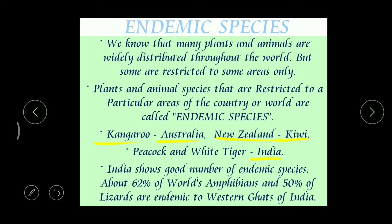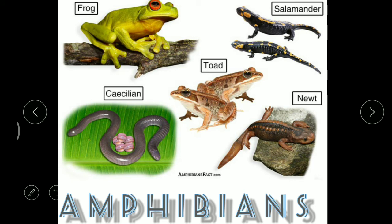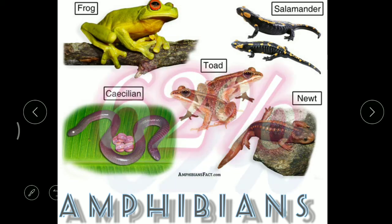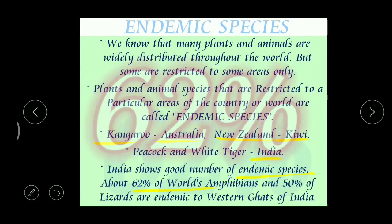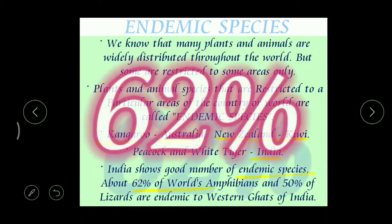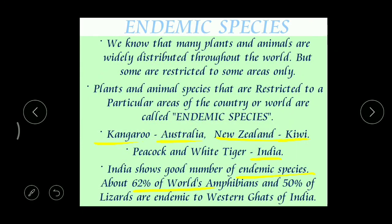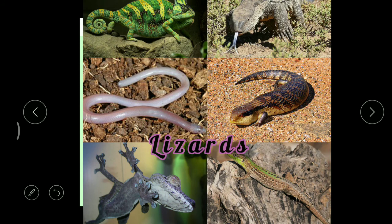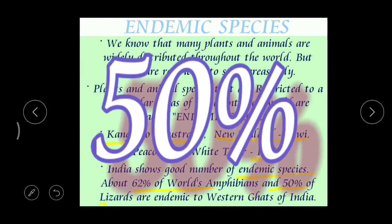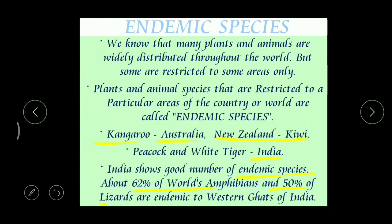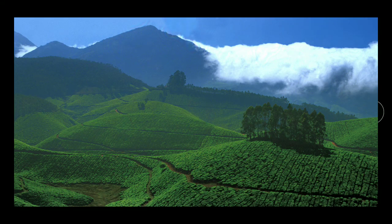India shows a good number of endemic species. For example, when we take amphibians - of all the amphibians found throughout the world, 62 percent are found only in India. And when we take lizards, 50 percent of different varieties of lizards are found only in India, especially in the Western Ghats.